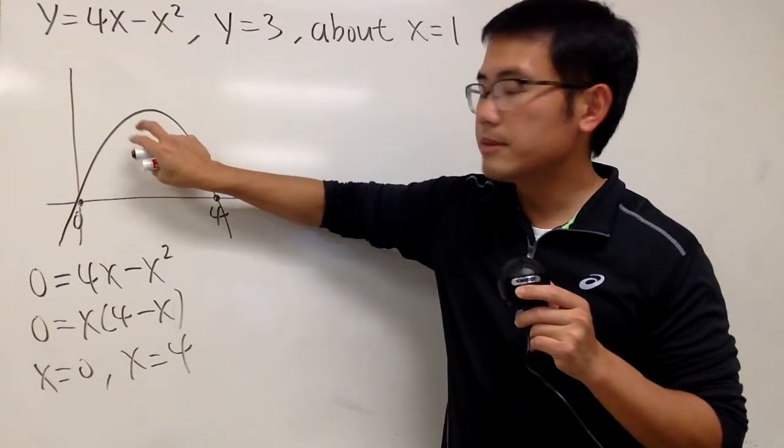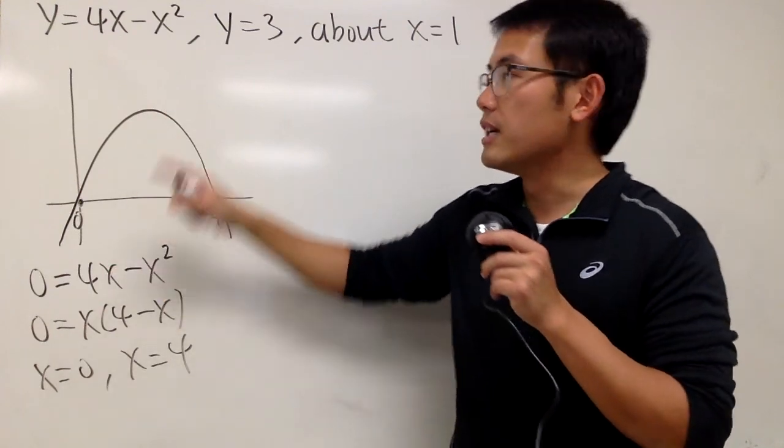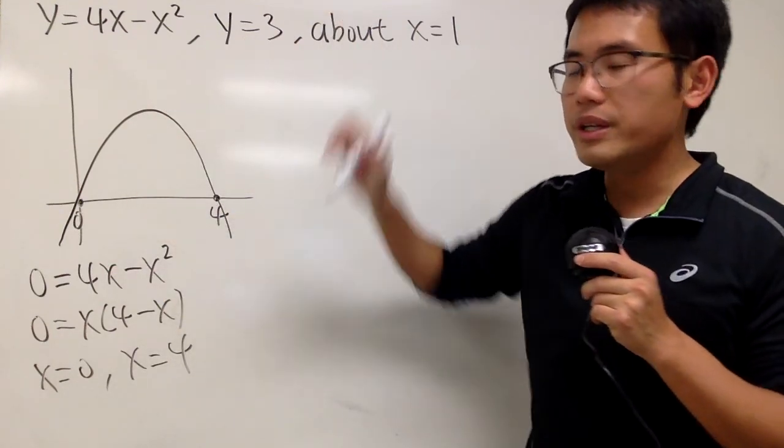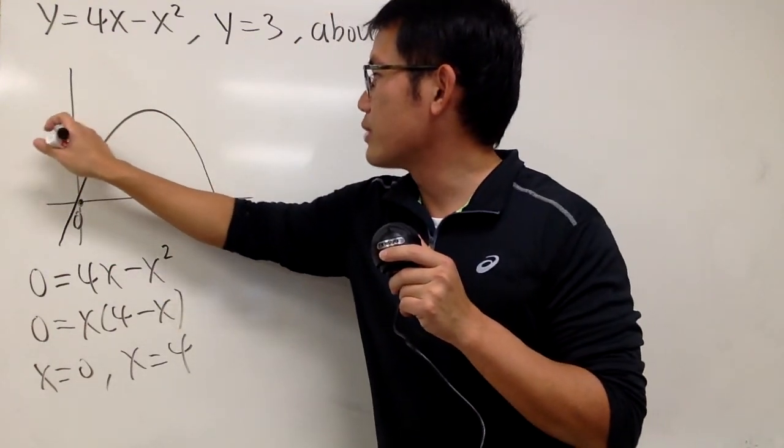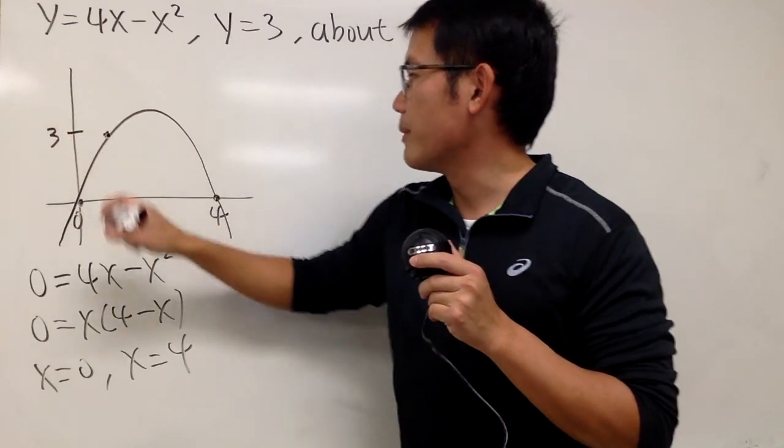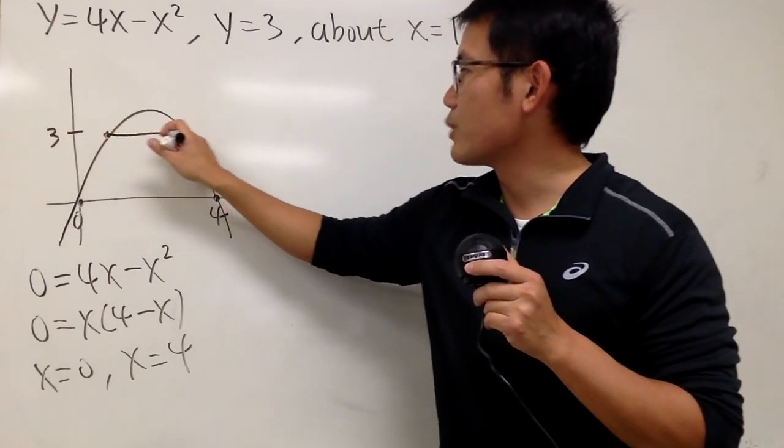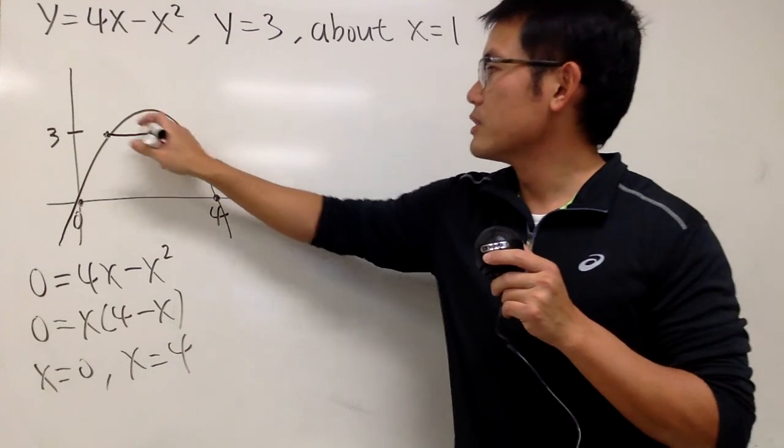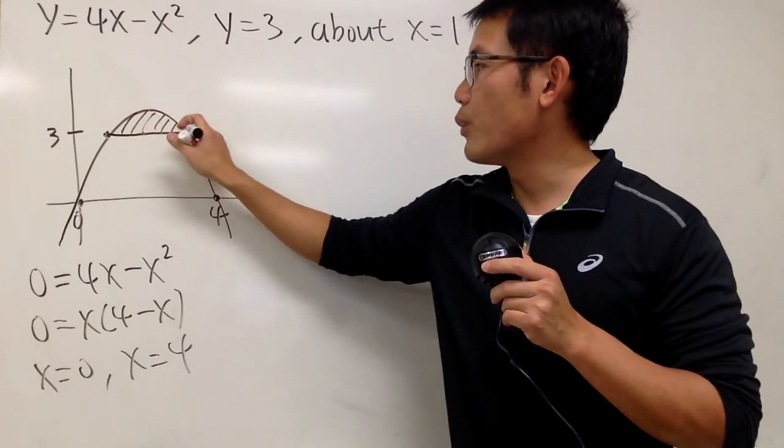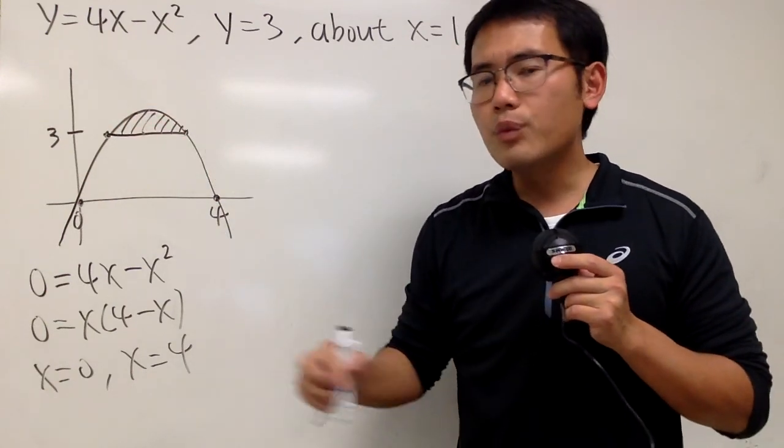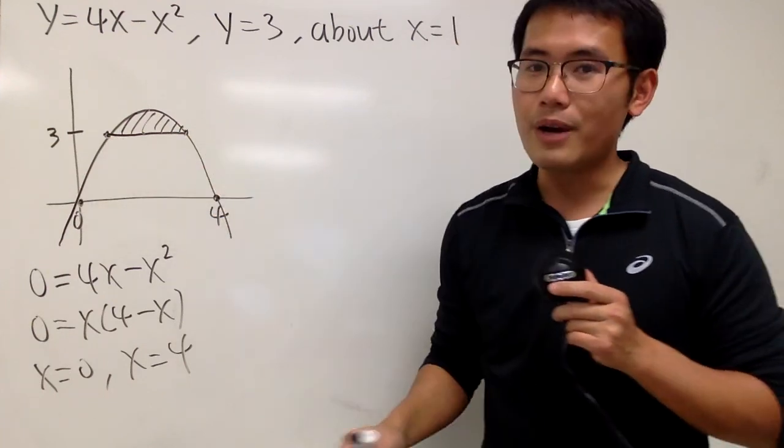However, we are not taking this region and doing the rotation, because right here it says y equals 3. So, let me just say this right here is when y equals 3, so I have to make a cut right here and here. So this is actually the region that we are talking about. However, we also need to find out the x-coordinates here and here, right?